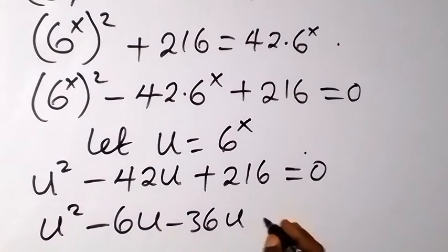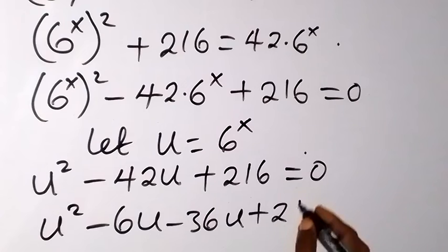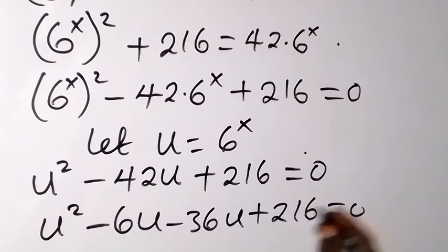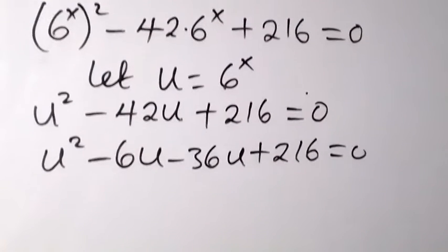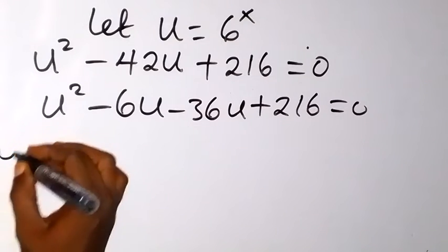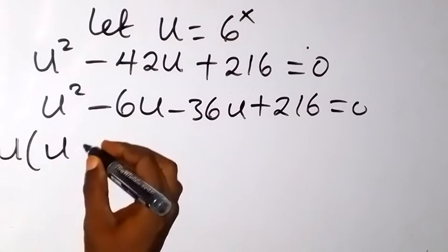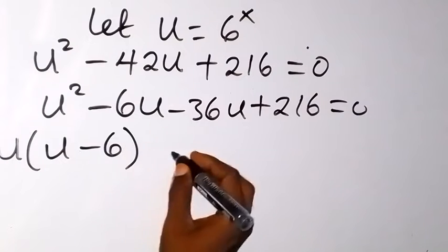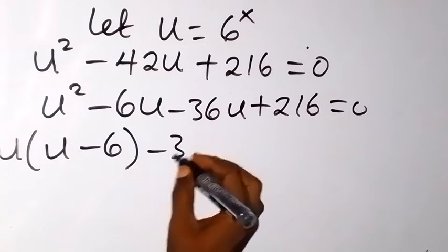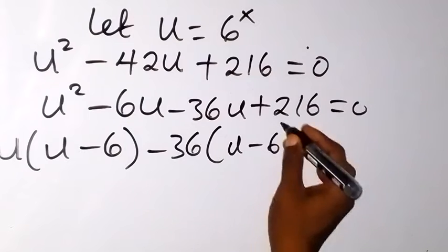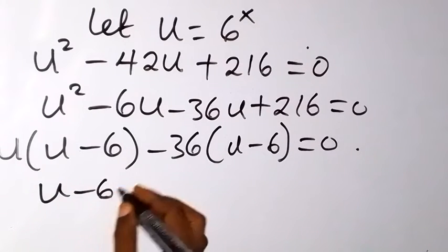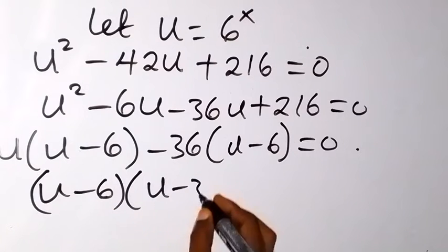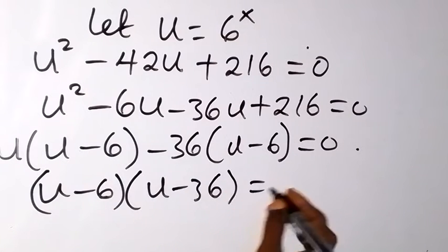So we have u squared minus 6u minus 36u plus 216 equals 0. Grouping in pairs: from the first two terms, u comes out giving u(u minus 6), and from the last two terms, minus 36(u minus 6). This factors as (u minus 6)(u minus 36) equals 0.